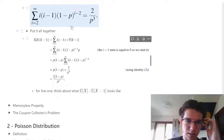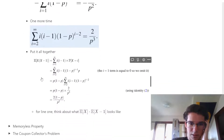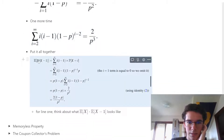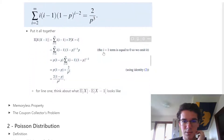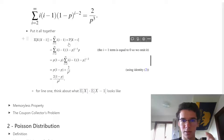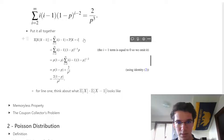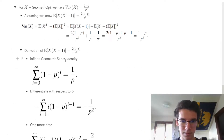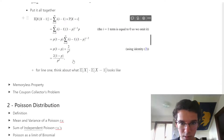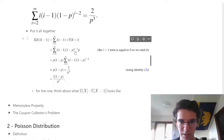Putting it all together: we assert that E[X(X-1)] equals this expression. To convince yourself, think about what E[X] alone would look like, then what E[X-1] alone would look like, and multiply those together to see how it matches the top expression. From there we substitute p(X = i) = (1-p)^(i-1) * p.